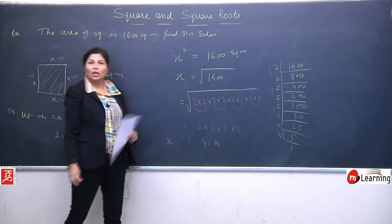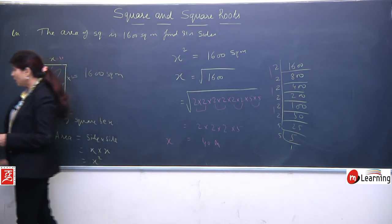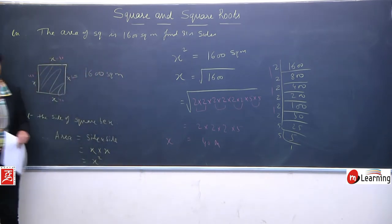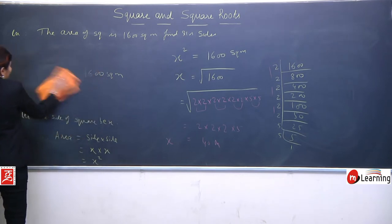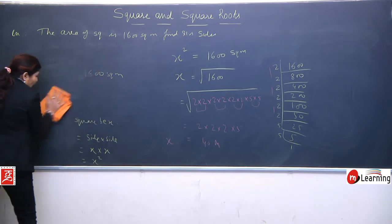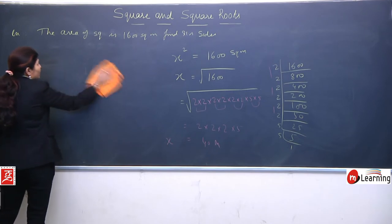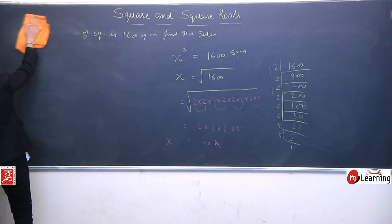Obviously the unit will be in meters because area was in square meters. So x equals 40 meters. This square has sides of 40. All sides will be 40, 40, 40, 40. So we were already doing this, but we didn't know we were indirectly doing square root. But now it's clear that we already learned about square roots, but we were not knowing that we are learning square roots.